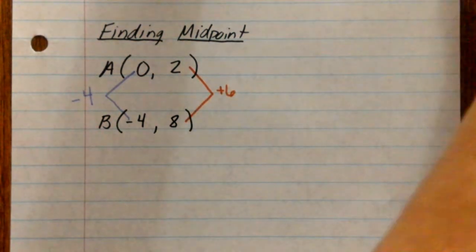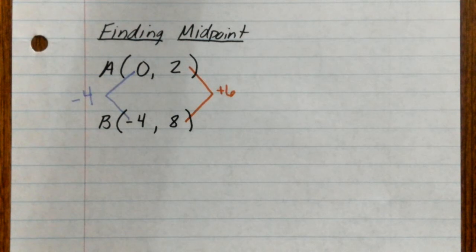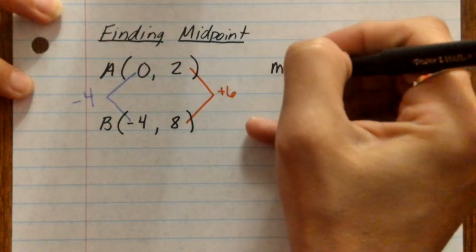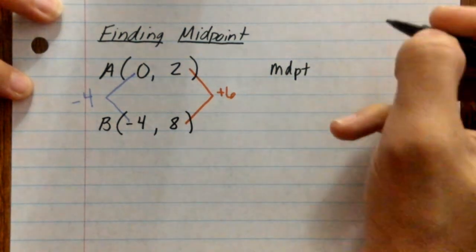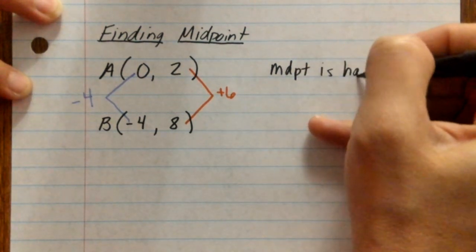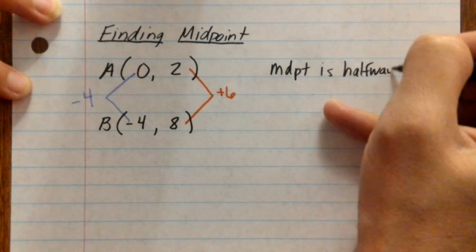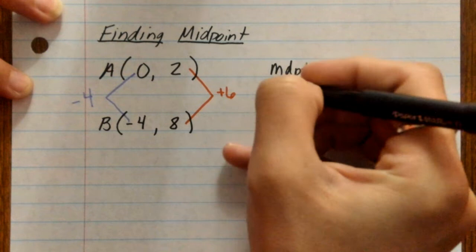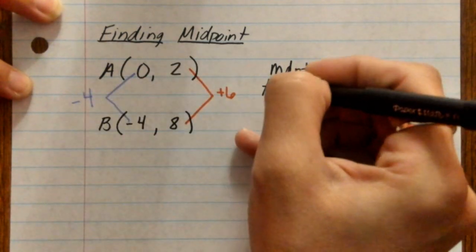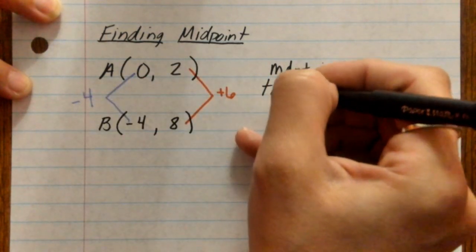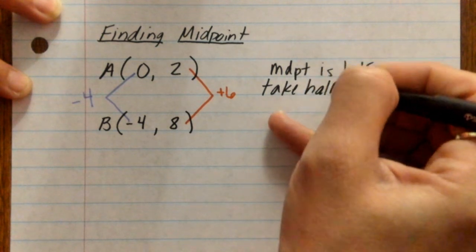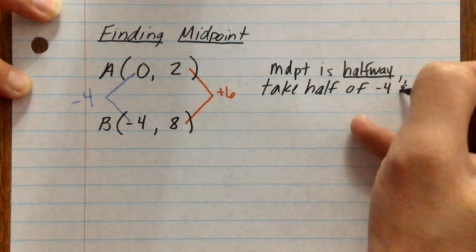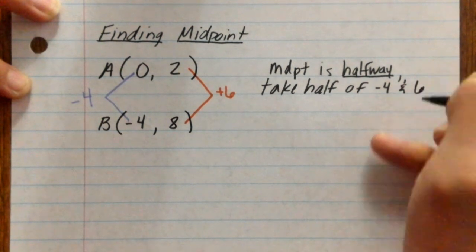Now, these two numbers are going to be important here in a moment. What we need to realize is that your midpoint, we can kind of abbreviate like this, your midpoint is halfway between your two endpoints, right? So what that means is these distances, we need to take half of that negative 4 and positive 6.